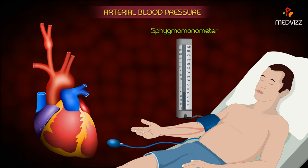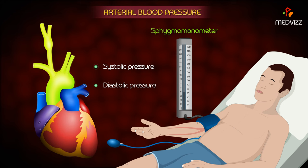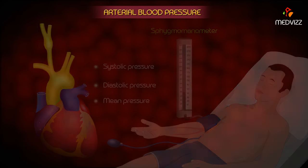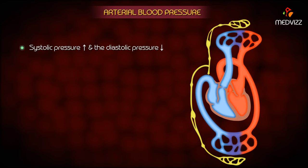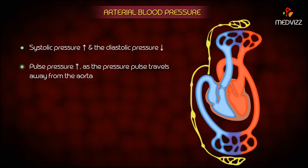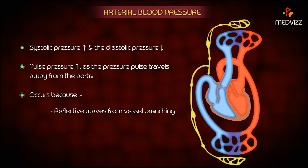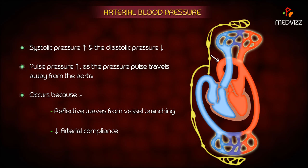As the aortic pressure pulse travels down the aorta and into distributing arteries, there are characteristic changes in the systolic and diastolic pressure, as well as in the mean pressure. The systolic pressure rises and the diastolic pressure falls; therefore the pulse pressure increases as the pulse travels away from the aorta. This occurs because of reflective waves from vessel branching and from decreased arterial compliance as the pressure pulse travels from the aorta into systemic arteries.